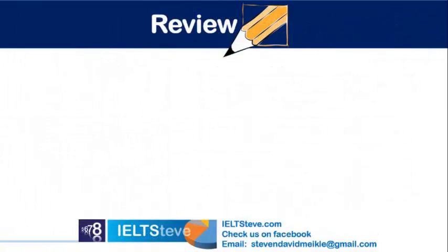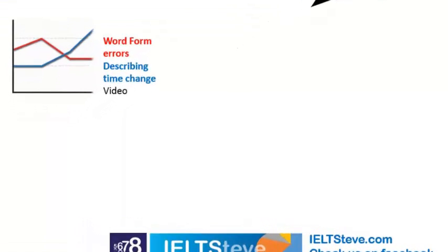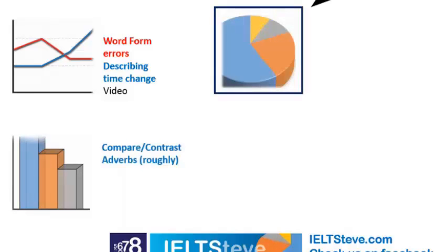So let's do a quick review of what we've discussed today. We talked about a line graph first — the things in red are the mistakes we focused on, and blue was when we were searching for good examples. We looked at word form errors and described time change. There's a video available on the IELTS Steve YouTube channel to check that out. For bar charts, we looked at compare and contrast, and adverbs like 'roughly' and how they were helpful. In pie charts, we looked briefly at repetition — to avoid it, we can use synonyms or different word forms.